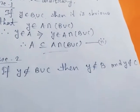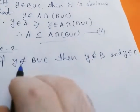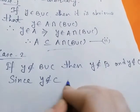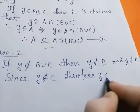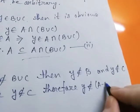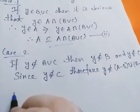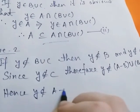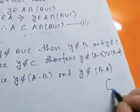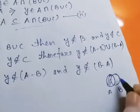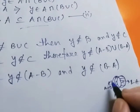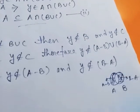So we name this result (2). Case 2: if y does not belong to B∪C, then obviously y does not belong to B and y does not belong to C — because if y belongs to B then y must belong to B∪C, or if y belongs to C then also y belongs to B∪C. So y does not belong to B and y does not belong to C. Since y does not belong to C, and C = (A minus B)∪(B minus A), therefore y does not belong to (A minus B)∪(B minus A).